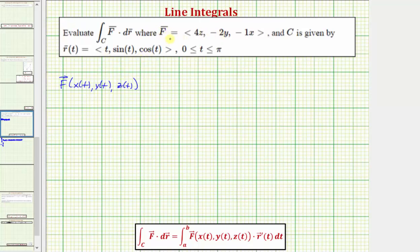Looking at F, the x component is four times z, so in terms of T it's going to be four times cosine T. The y component is negative two times y, so in terms of T it's negative two times sine T. And the z component is just negative x, which in terms of T would be negative T.